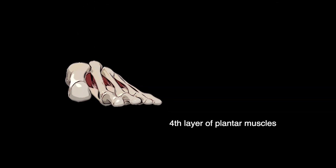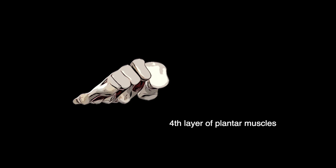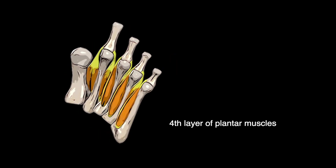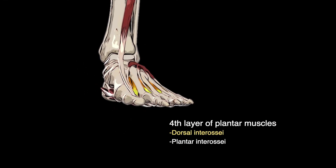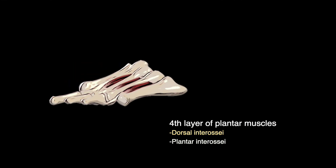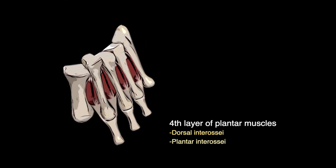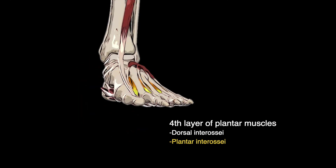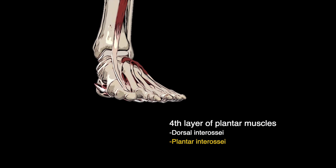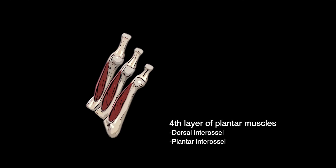The fourth and final layer of muscles at the plantar aspect of the foot is the deepest of the four layers. The muscles in this layer act on the second to fourth toes, producing flexion, abduction, and adduction at their metatarsophalangeal joints. The fourth layer is divided into two groups: the dorsal and plantar interossei. The dorsal interossei act on the second to fourth toes producing abduction and flexion at their metatarsophalangeal joints, numbered one to four from medial to lateral. The plantar interossei, labeled one to three, act on the second to fourth toes producing adduction and flexion at their metatarsophalangeal joints.